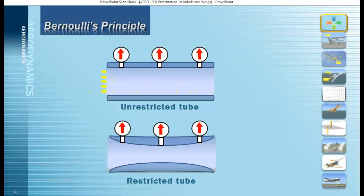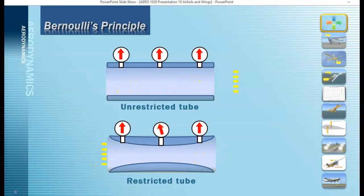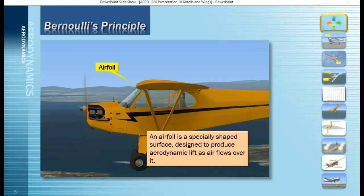Daniel Bernoulli's work with fluid dynamics led to a discovery now known as Bernoulli's Principle. Bernoulli's Principle states that fluid forced through a restricted tube or a narrow opening reacts in a way that the velocity of that fluid increases. And because of that increased velocity, the pressure in that section of the tube actually decreases. An airfoil is designed to take advantage of Bernoulli's Principle — it's a specially shaped surface that produces aerodynamic lift as air flows over it.